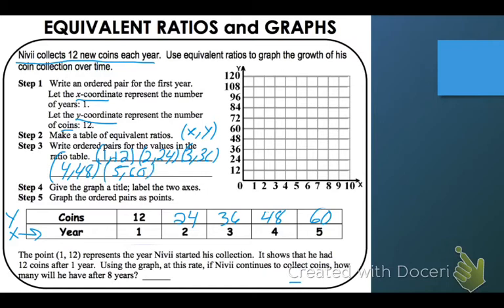And what it wants us to do now, it says if we look at number 4, it says give the graph a title and label the two axes. Well, the axes are the X and Y. So X was years, and we know that because it told us that. And the Y happens to be at the top, which is coins.